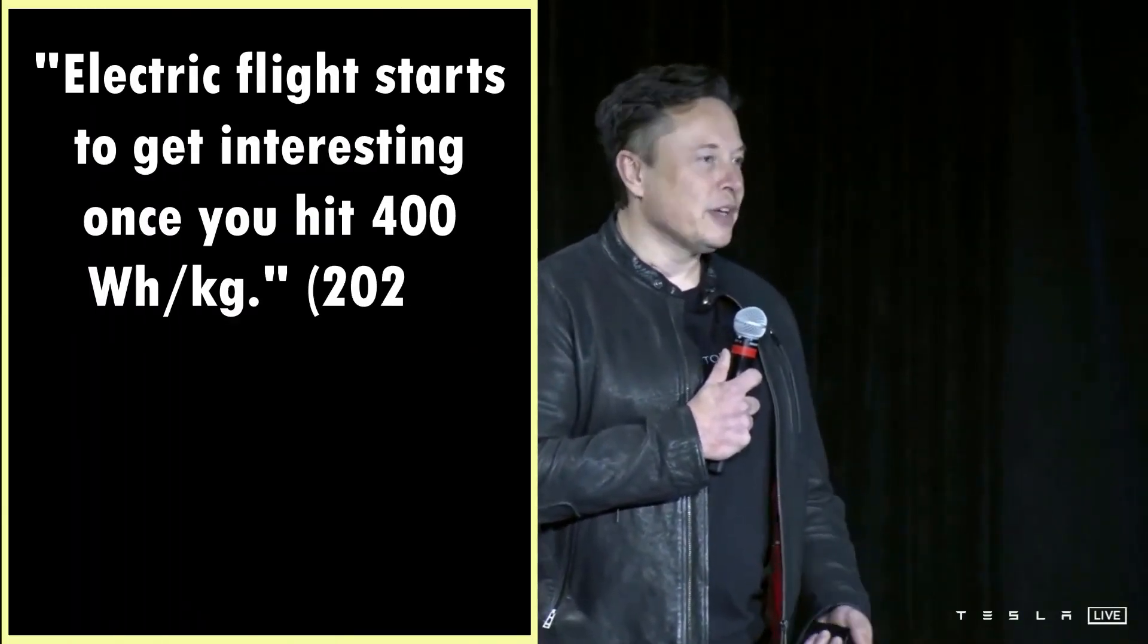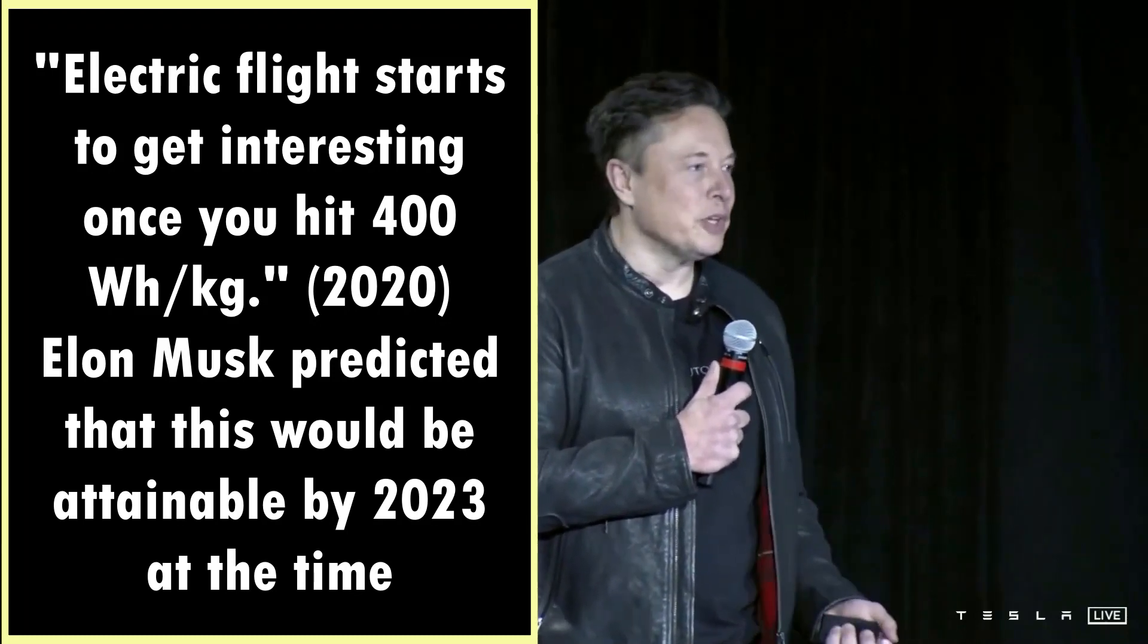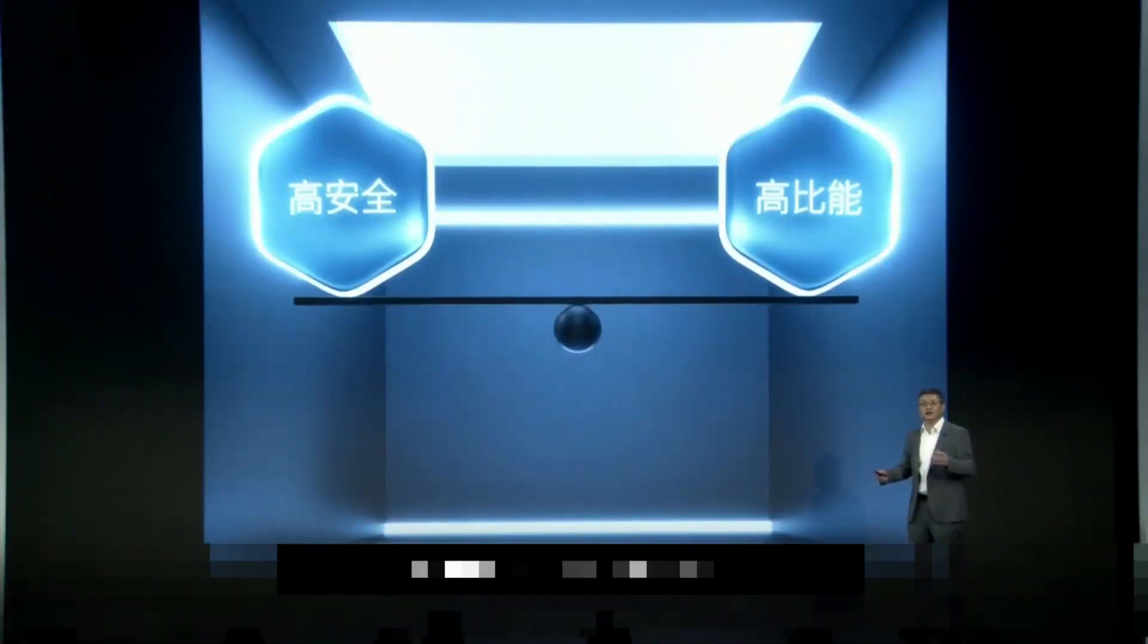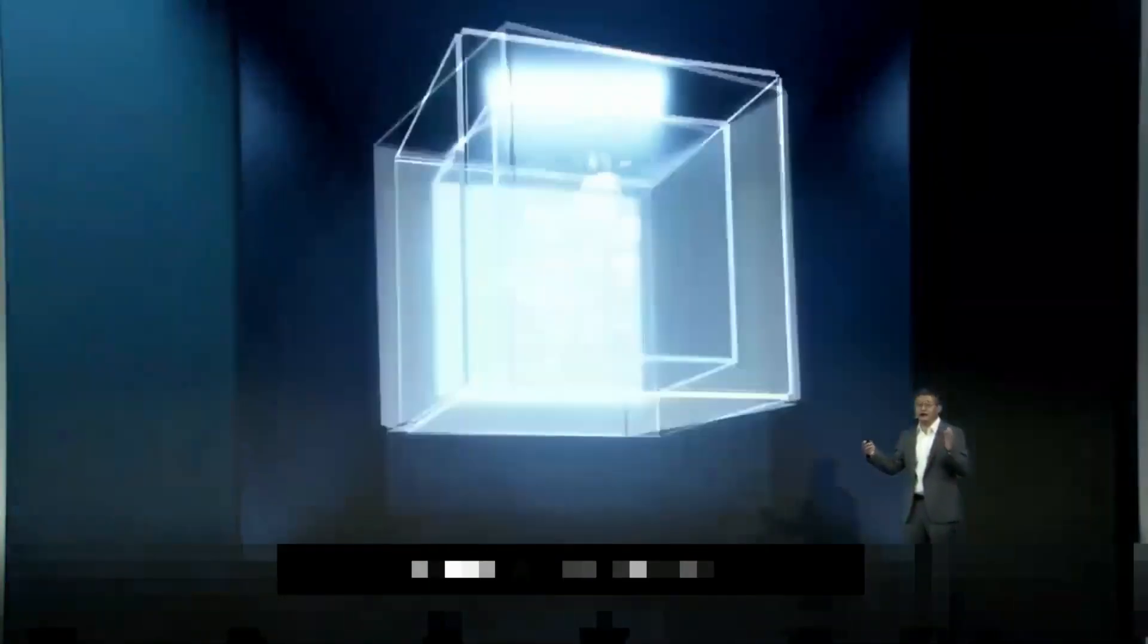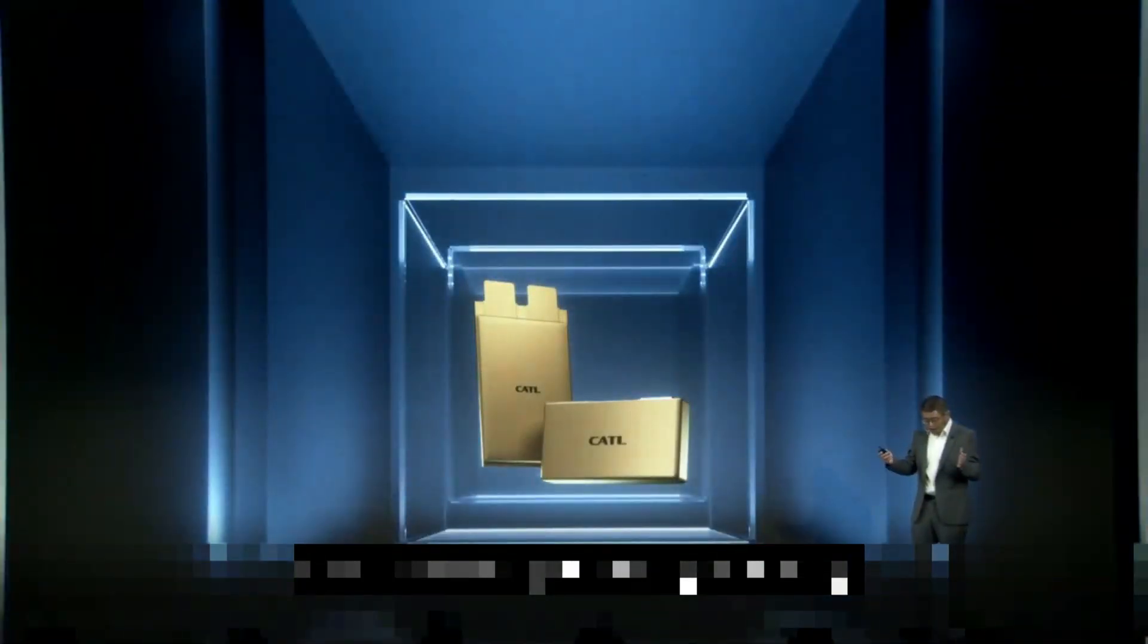Elon Musk stated in 2020 that electric flight starts to get interesting once you get 400 watt-hours per kilogram. He predicted that this would be attainable by 2023 at the time. This week's announcement confirms, if not exceeds, Musk's prediction that this level of energy density would be commercially feasible by now.